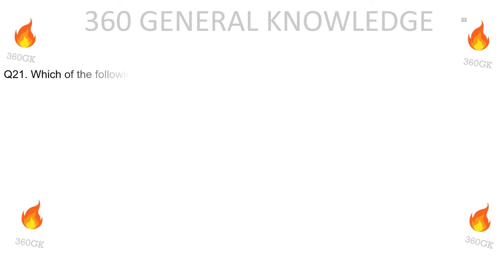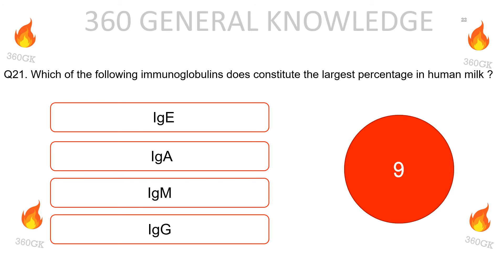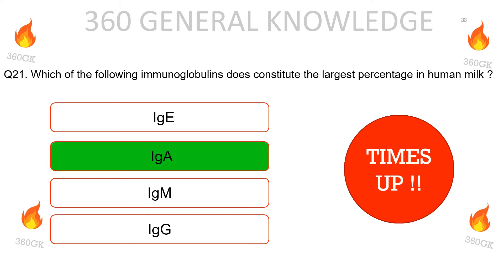Which of the following immunoglobulins constitutes the largest percentage in human milk: IgE, IgA, IgM, or IgG? The correct answer is IgA.